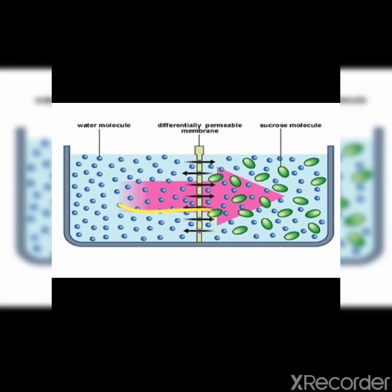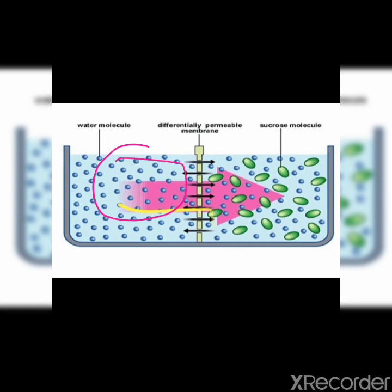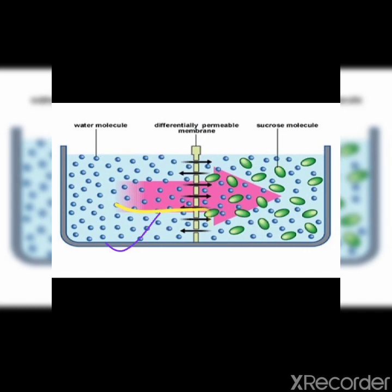In front of you there is a figure in which you can see two compartments. Over here it is pure water — water molecules are present in this compartment, that is the pure solvent. On the right hand side you can see sucrose molecules, or we can say this is a sugar solution. Both compartments are partitioned with a differentially permeable membrane, also known as semi-permeable or selectively permeable membrane, because it will only allow the solvent particles to move and restricts the movement of solute particles.